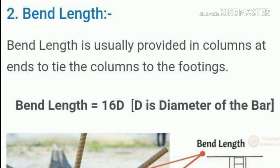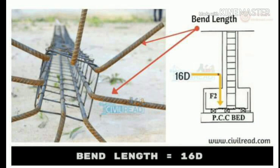It is a band length. It is 16D where D is the diameter of the bar. Here I am going to show you the RMR. It is a band length. It is 16D — suppose 16mm diameter.